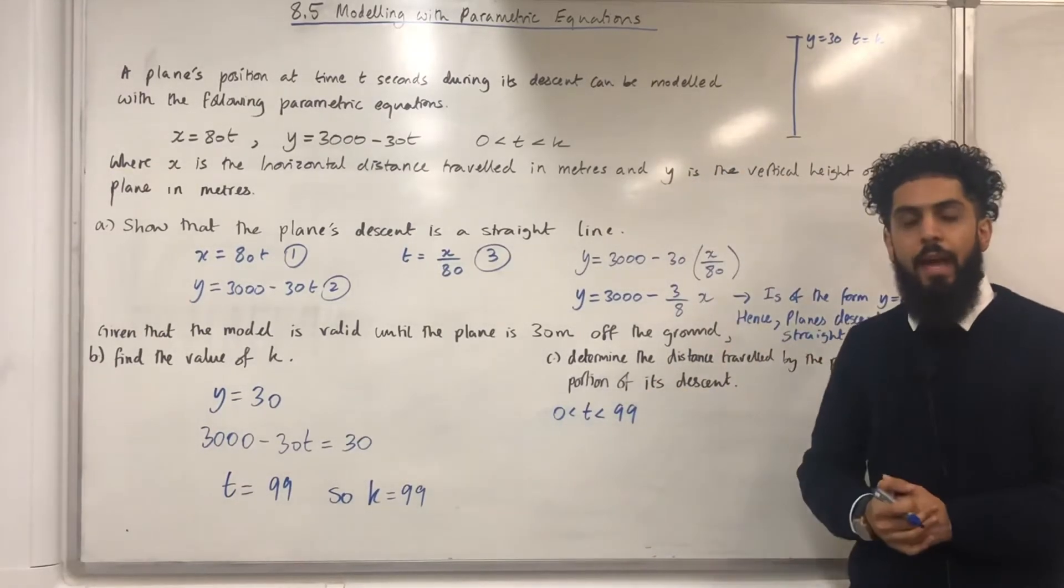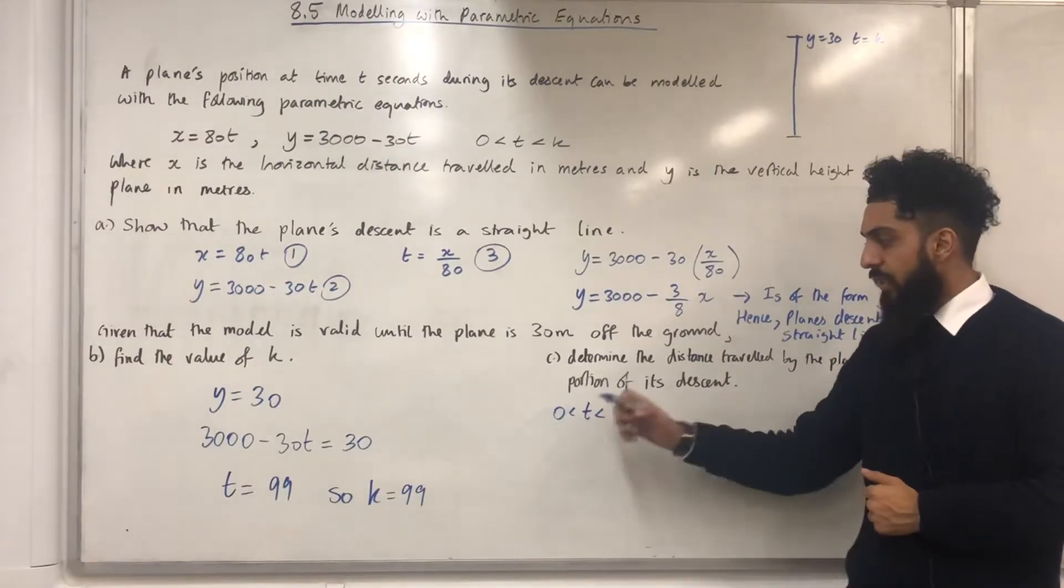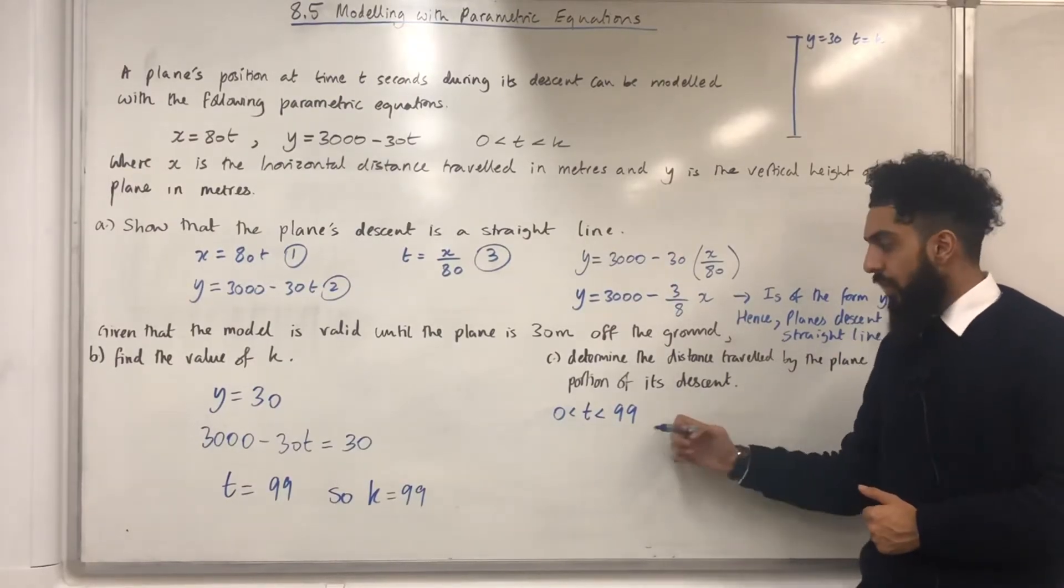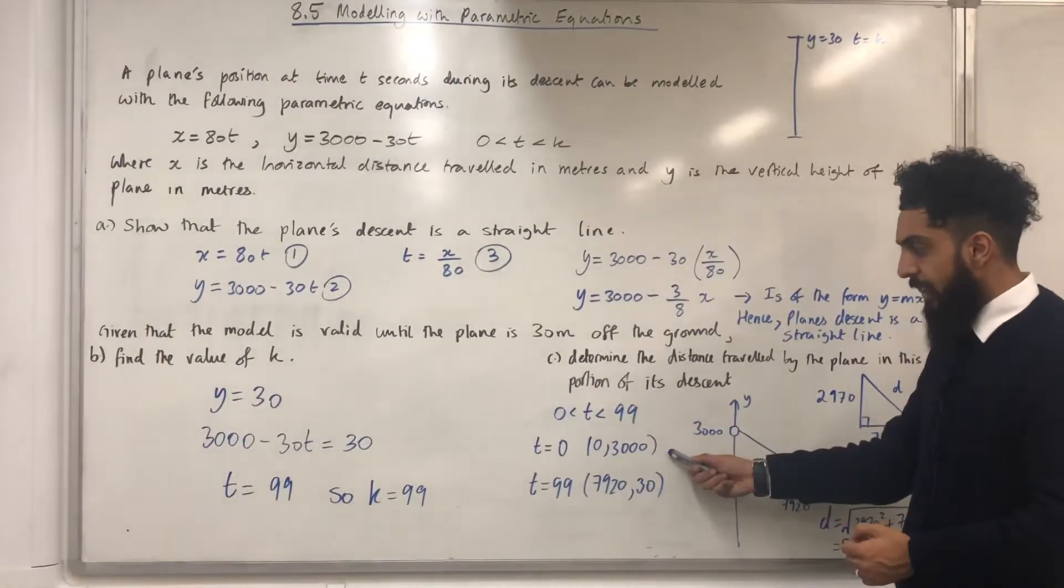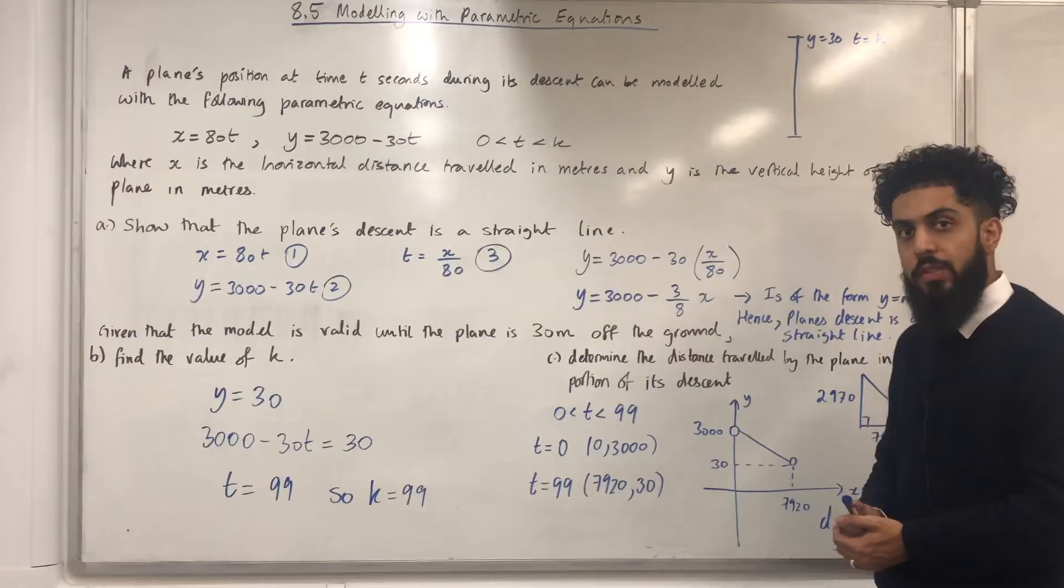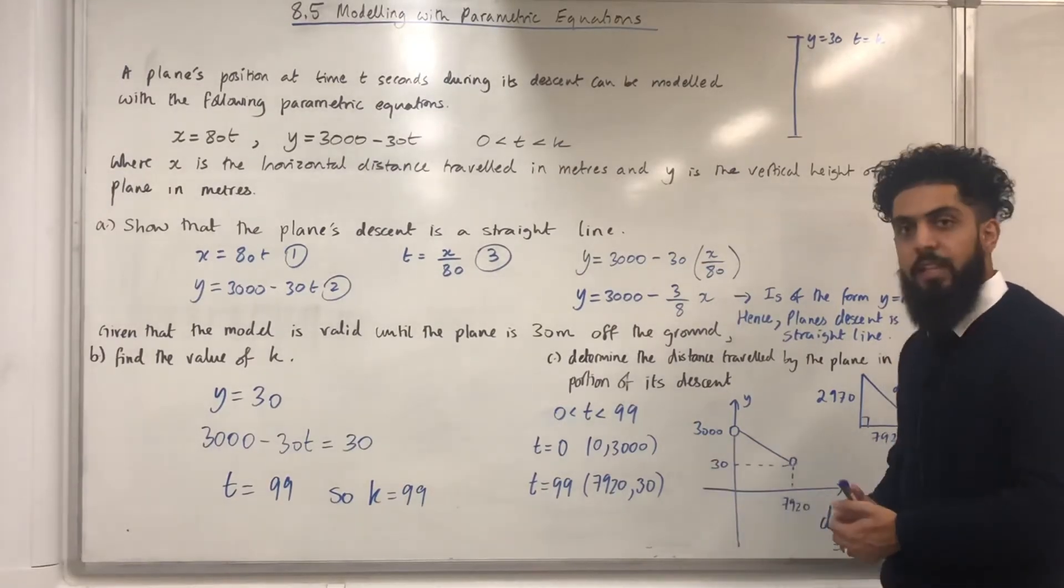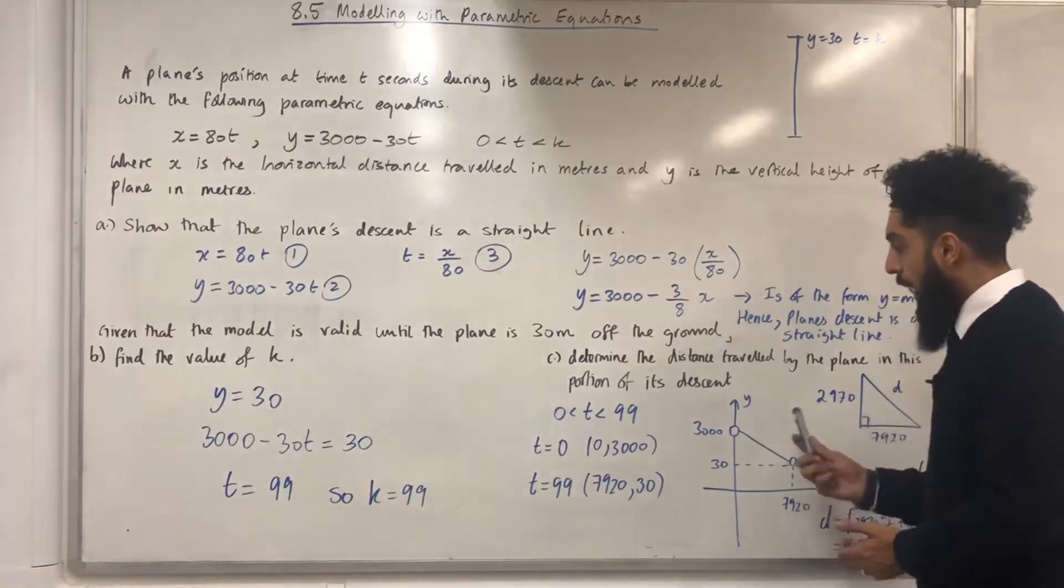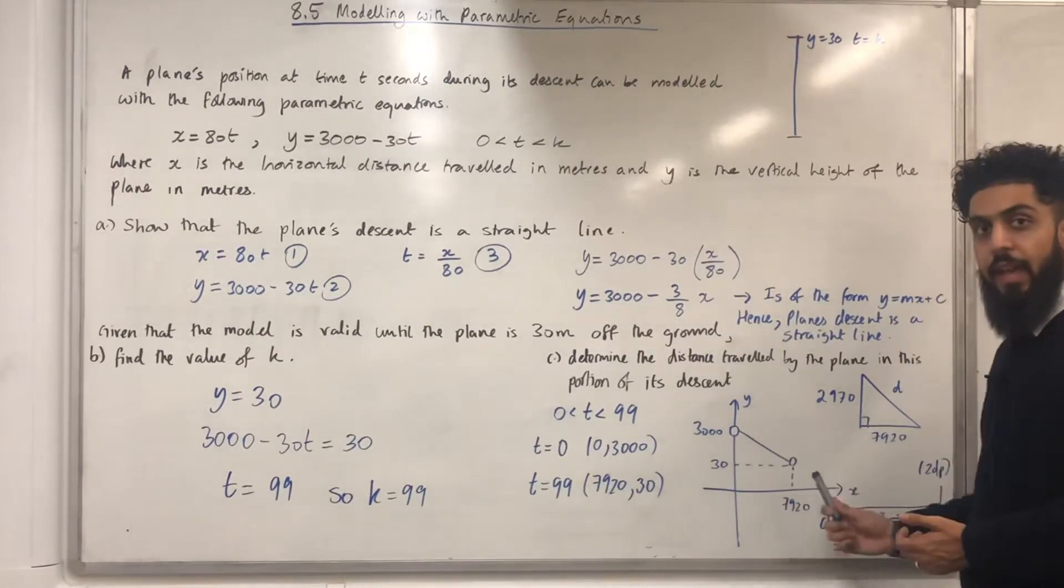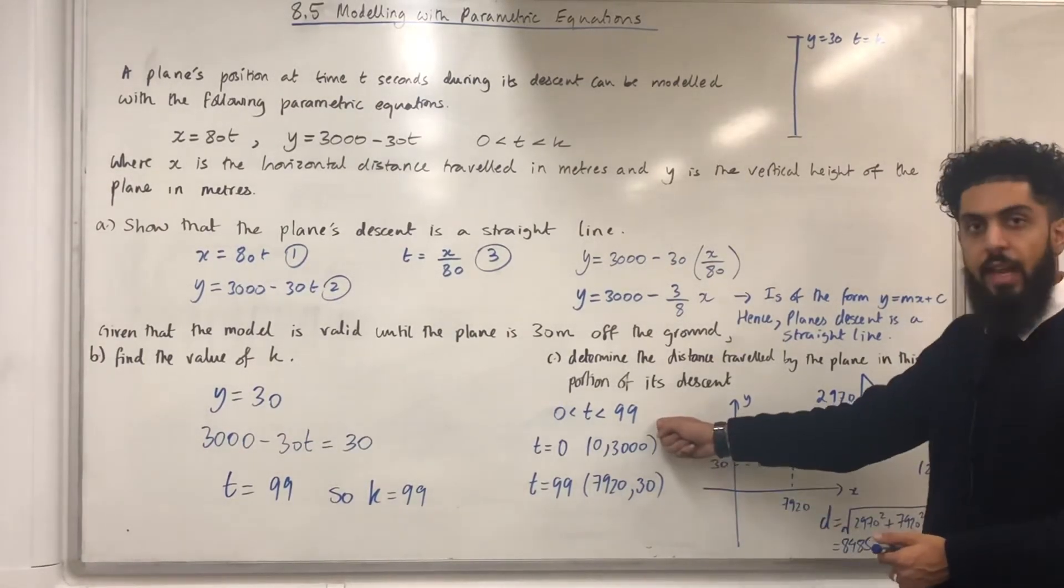I want to work out the coordinates when t equals 0 and when t equals 99. Here are my two coordinates. The first coordinate is calculated by substituting t equal 0 into the parametric equations. The second coordinate is calculated by substituting t equal 99 into the parametric equations. Here is the graph of y against x for t is more than 0 but less than 99.